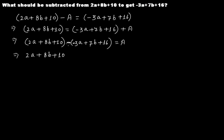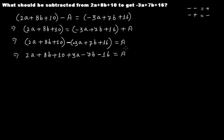Open the bracket: we have 2a plus 8b plus 10. Outside the bracket is minus, inside is minus, so minus times minus makes plus 3a. Outside minus, inside plus, gives minus 7b. Outside minus, inside plus, gives minus 16. So A equals 2a plus 8b plus 10 plus 3a minus 7b minus 16.